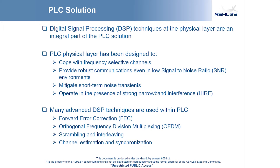Orthogonal frequency division multiplexing transmits the overall signal upon multiple sub-carriers, meaning that regions of high attenuation will only affect a small portion of the transmitted signal rather than the complete signal. Using scrambling and interleaving allows the influence of noise bursts to be reduced. Channel estimation and synchronization allow the receiver to synchronize to the signal from the transmitter even though they both have asynchronous clocks. It is these techniques among others that provide for reliable communications even in the harsh environment provided by the aircraft power distribution network.